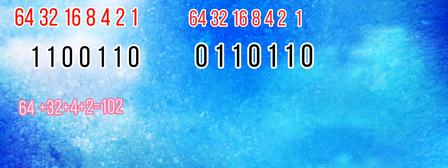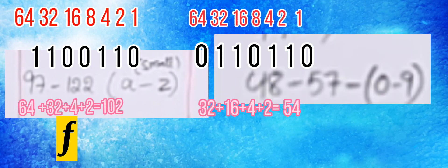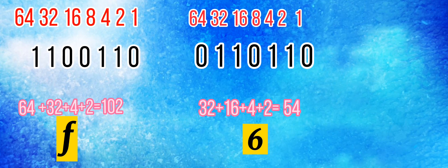That equals 102. Then for the second one, we have 32, 16, 4, and 2. Adding those gives us 54. 102 is in the lowercase alphabet range, so 102 is F. 54 is in the 0 to 9 range, so this converts to 6. So the result is F6. From binary to decimal value to ASCII code, our ASCII code is F6.